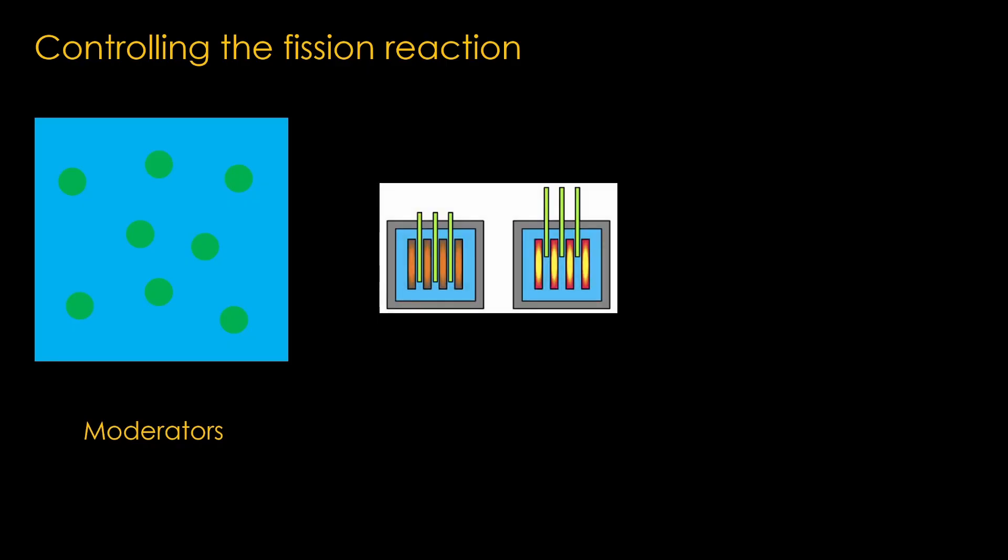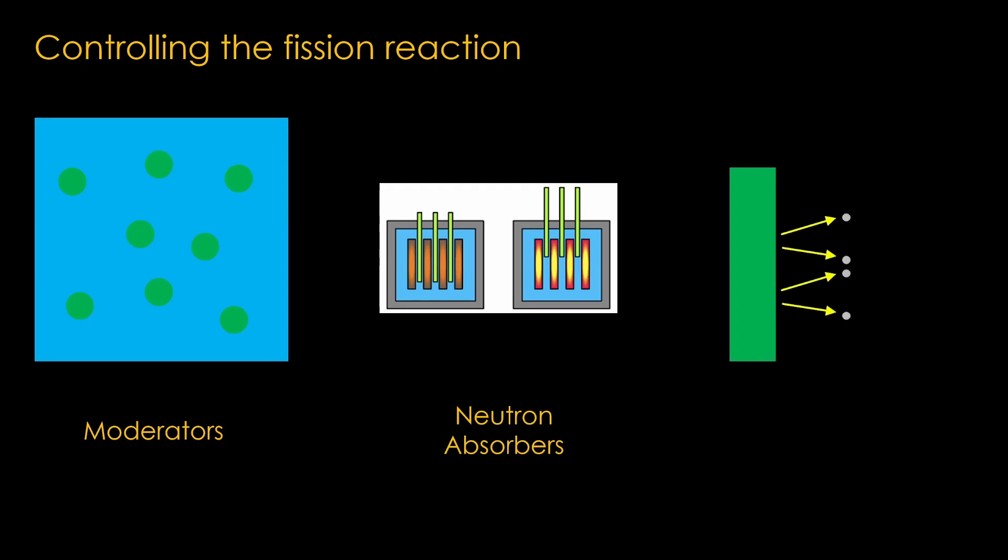There are other chemical elements, such as boron or cadmium, that absorb neutrons. They are used in control rods and nuclear reactors. Drop them down into the core and they will absorb neutrons and reduce the rate of the reaction.